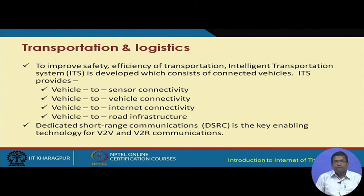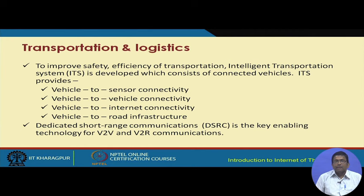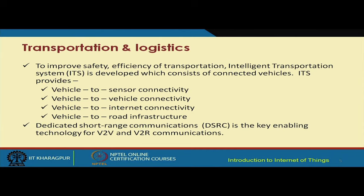IIoT solutions are very attractive in the healthcare sector. In the transportation and logistics sector, in order to improve transportation safety and efficiency, intelligent transportation systems can be developed. One of the key building blocks is the concept of connected vehicles. Intelligent transportation systems come in different forms, including vehicle-to-sensor connectivity, vehicle-to-vehicle connectivity, vehicle-to-internet connectivity, and vehicle-to-road infrastructure connectivity.